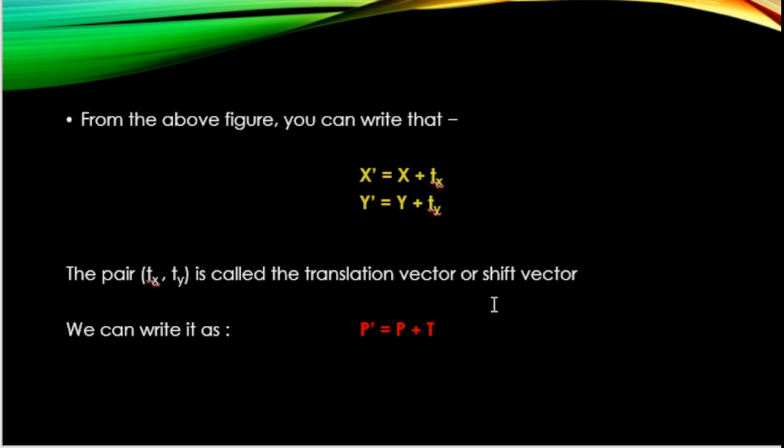called the translation vector or shift vector. We can also write this relation as P' = P + T, where T is the translation vector.